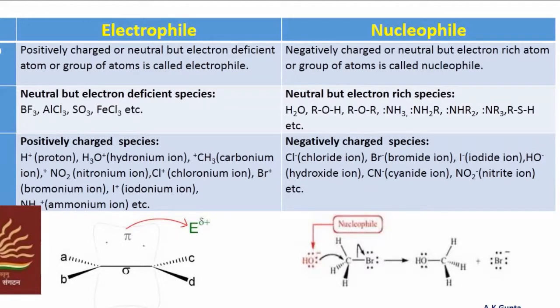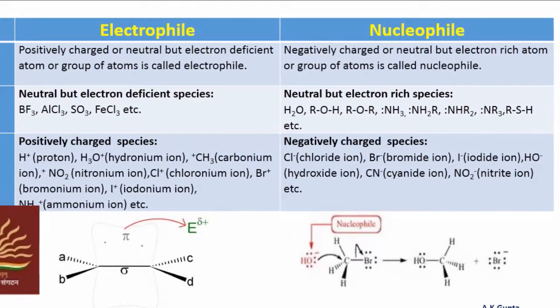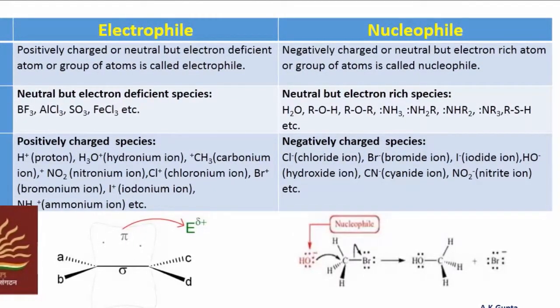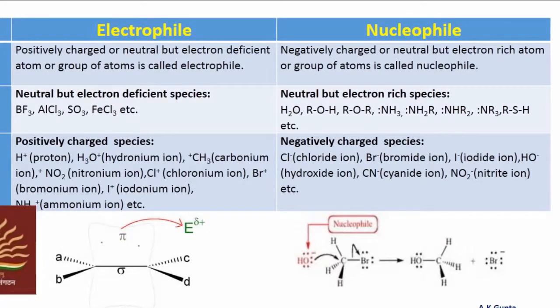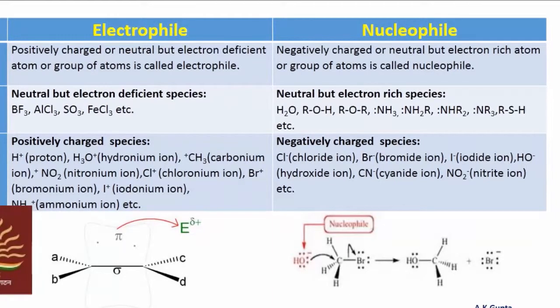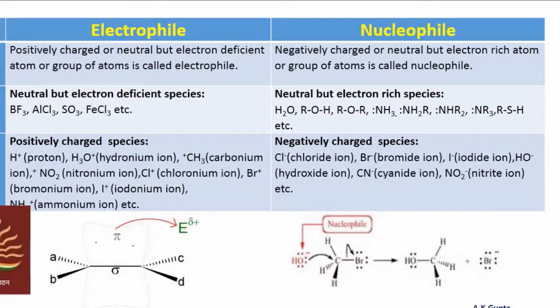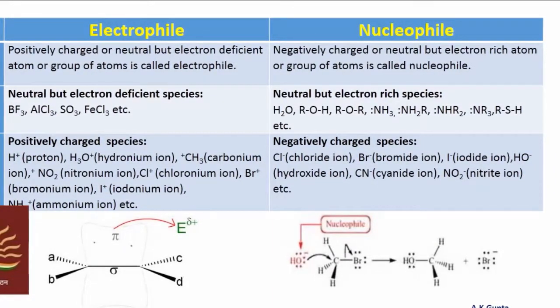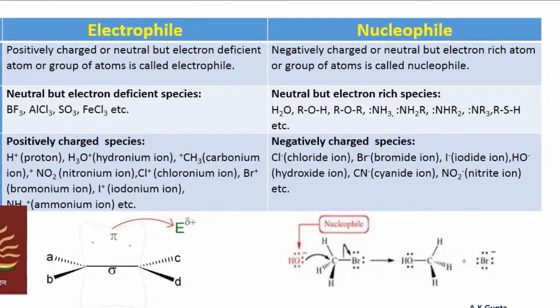The negatively charged species will behave as nucleophiles. Examples are chloride, bromide, iodide, hydroxide HO-, cyanide CN-, nitrite NO2-.